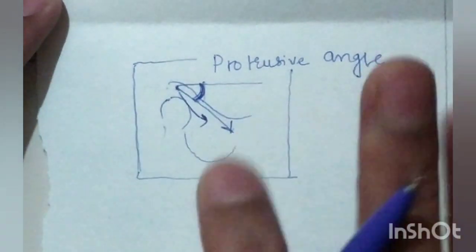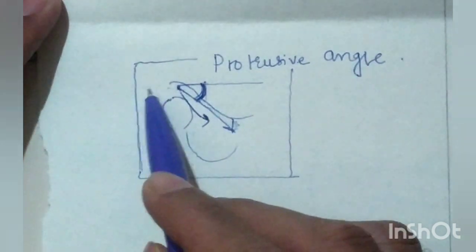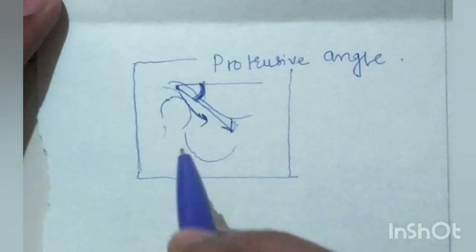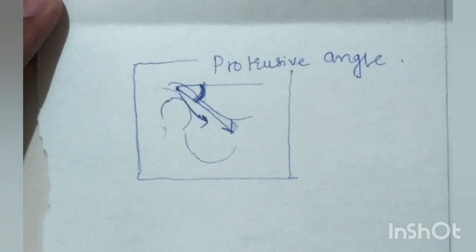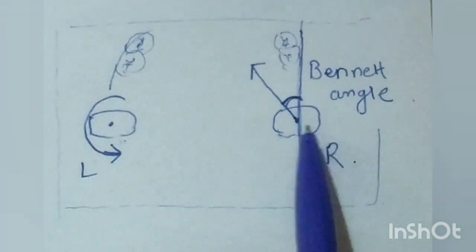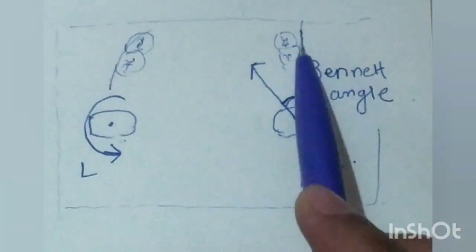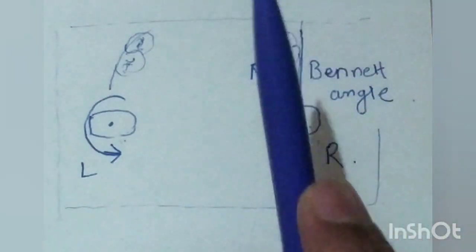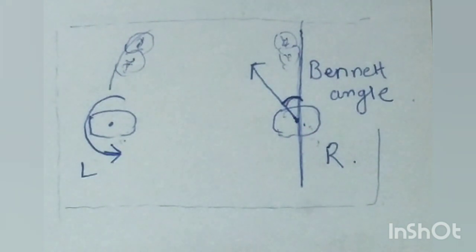However, the condyle is not just protruding — it is also going inward medially, which is mediotrusive movement inside the sagittal plane. In the transverse plane, the left condyle rotates while the right condyle moves mediotrusively in a medial direction. The angle made by the motion of the non-working condyle with the sagittal plane is called the Bennett angle.